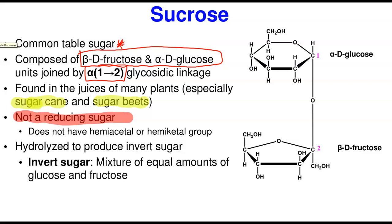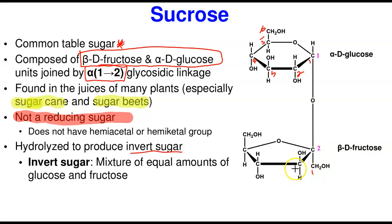Sucrose is not a reducing sugar. It does not have any free hemiacetal or hemiketal group — both hemiacetal groups have been used to form the glycosidic bonds. It is hydrolyzed to produce invert sugar, which is a mixture of equal amounts of glucose and fructose. Invert sugar is very sweet. Look at the structure: alpha-D-glucose has the OH group pointing down at carbon one, and this is carbon one, two, three, four, five, and six. Fructose is always a furanose ring.